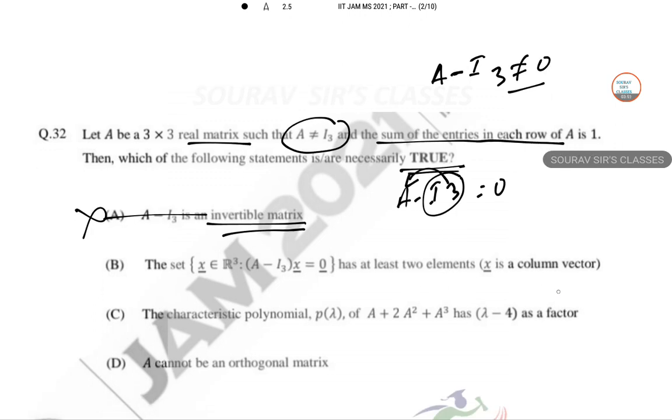Option B: at least two elements. A minus I₃ equals 0 system is homogeneous and we know this system has infinitely many solutions. So more than one solution is possible, at least two also we can say. So B is a possibility.